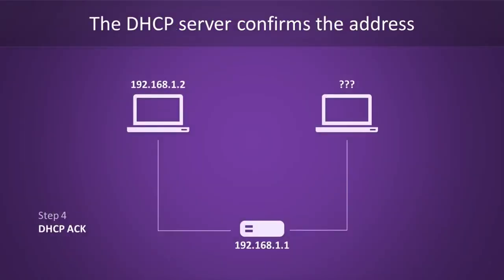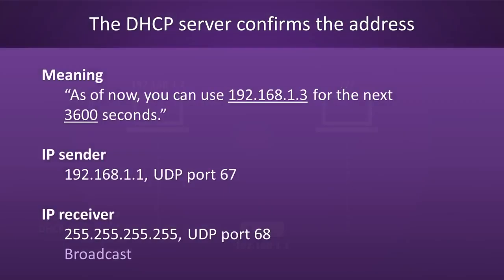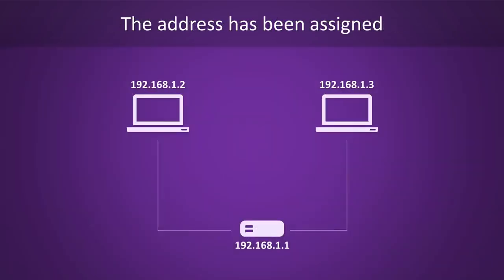We're down to the fourth and final step now. This one's called DHCP ACK, where the ACK stands for acknowledgement. In this step, the DHCP server will confirm to the host that it can start using the address. Like in all other steps, this message will also be broadcast. A DHCP ACK message will confirm that the host can start using the address for the previously specified amount of time. The server will put its IP address into the sender field and use ports 67 and 68 as the sender and receiver. After the host receives confirmation, the process is complete and the host can start using its shiny new IP address.